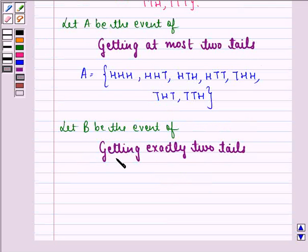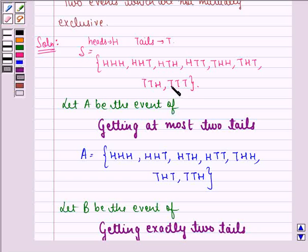Now, let B be the event of getting exactly 2 tails. So the elements where we have exactly 2 tails is HTT, THT, and TTH.